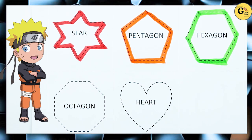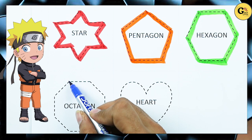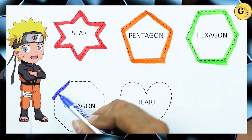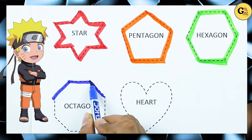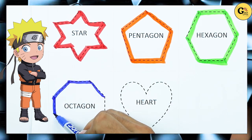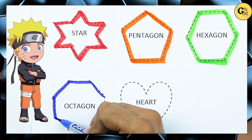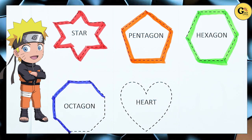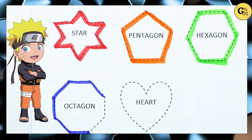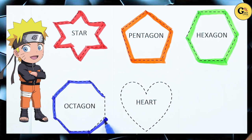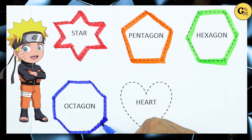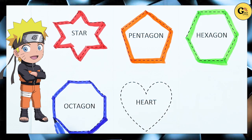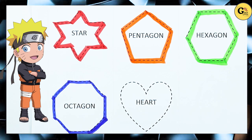Octagon: one line, two line, three line, four, five, six, seven, eight. Eight lines means octagon.